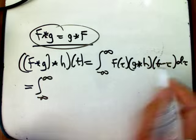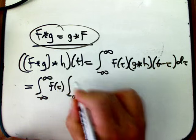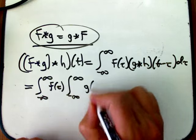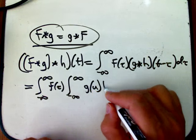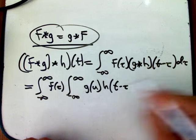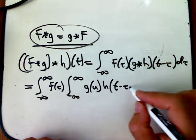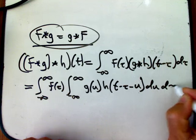Now we unpack the inner convolution. That's an integral as well. And that's going to be g of, I need a new dummy variable. I'll just use u, because I don't really need to use more Greek letters. Now that's going to be t minus tau, but then minus u. And then du, and then d tau.